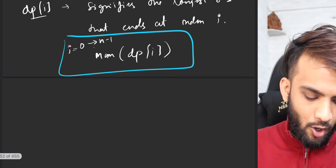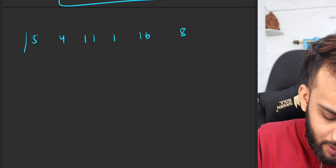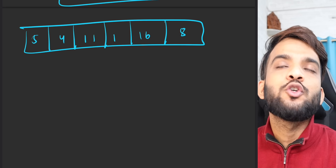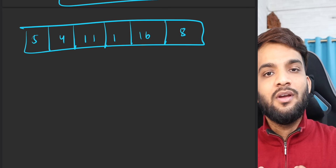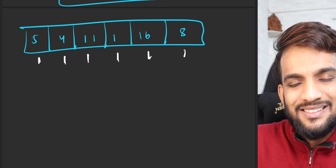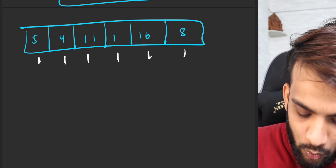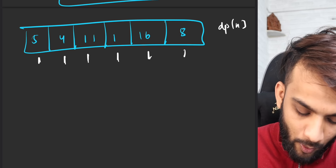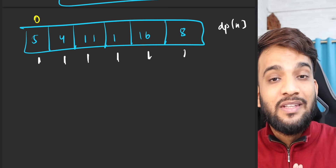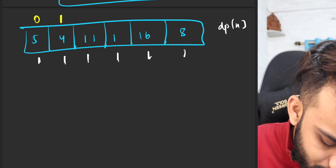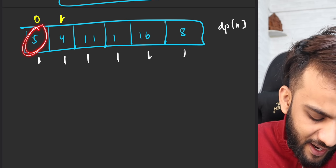So the key question is: how do you compute dp[i]? The thought process is: for any index, even if there's no previous element, the length is always at least 1 — the element itself. So initially all dp values are assigned 1. For index 0, there are no previous elements, so dp[0] stays 1. For index 1, the previous element 5 is greater, so dp[1] stays 1.